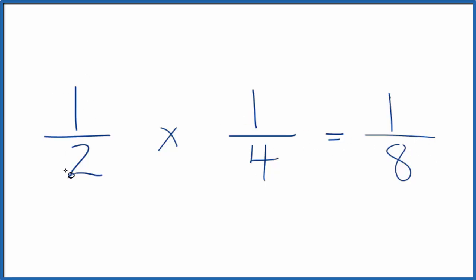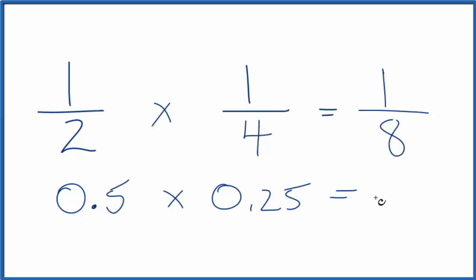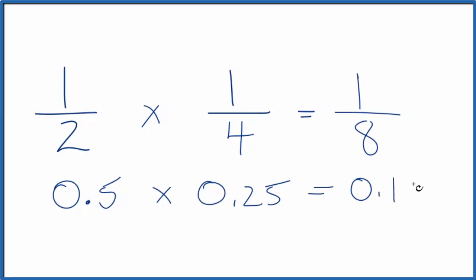We can check this by looking at each of these as decimals. One-half, that's 0.5. If you divide one by two, you'll get 0.5. If we multiply this, one divided by four, that's 0.25. So 0.5 times 0.25, that gives us 0.125.